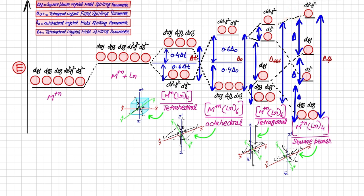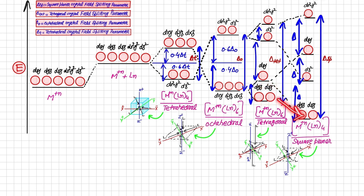In square planar geometry, dx²-y² goes further high in energy, while dz² drops so much that it falls below dxy. dxy rises because ligands approach strongly from the xy axes. dyz and dxz go to the lowest energy since z-axis ligands are completely absent. The greatest splitting of the d orbitals occurs in square planar geometry.